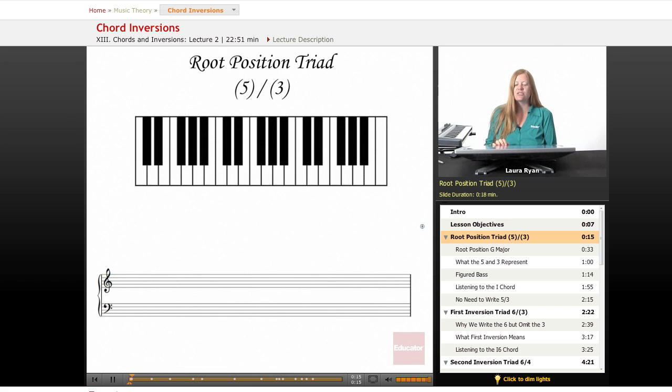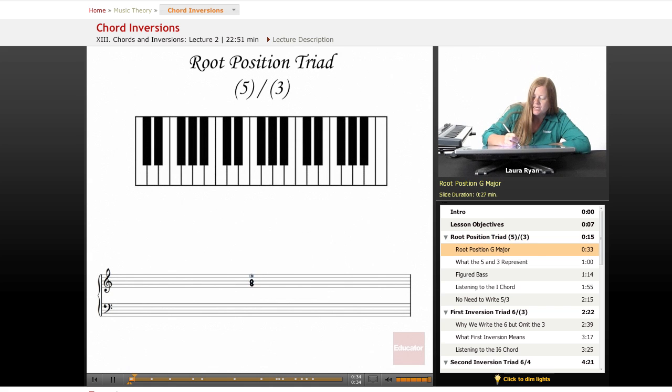Okay, let's talk about root position. Root position. It sounds strong like the root of a tree. It is strong. We're using the tonic note at the bottom and we will start with a G as an example. So here's our G, B, D. Here is our triad G, B, D.